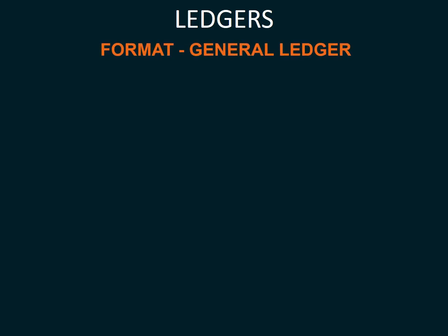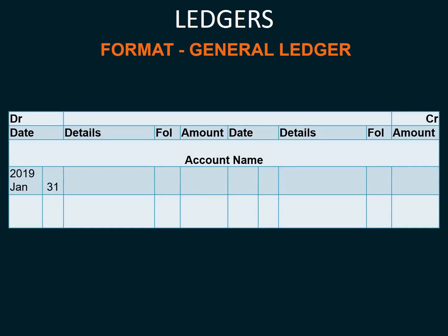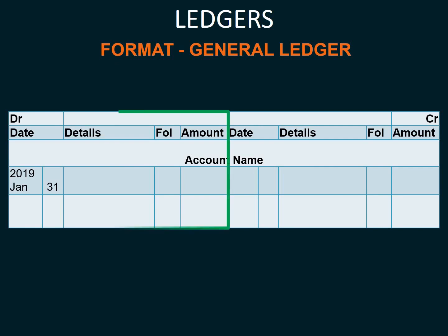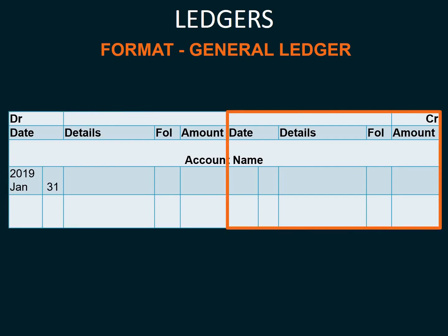The general ledger is also referred to as a T-account because of its T shape. It has a debit side on the left and a credit side on the right. The date is written in a unique format: you write the year, then the month, then the day, as indicated in the yellow square.